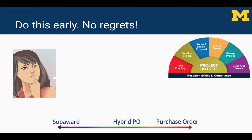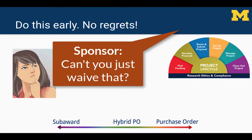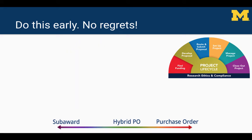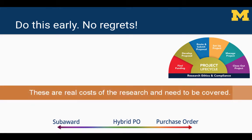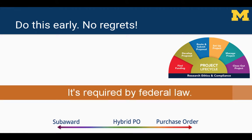Some teams know the difference between the classifications but simply don't want to ask the sponsor to pay the appropriate indirect costs U of M is entitled to receive, for fear the sponsor will consider the proposal too costly and turn it down. At times, PIs are faced with sponsors that refuse to pay indirects on 100% of the proposed contracts. It's best to work with your financial manager at the proposal stage to determine funding alternatives rather than misclassify a recipient, especially when the organization is funded under a federal award, to ensure U of M is in compliance with the requirements of the Uniform Guidance.